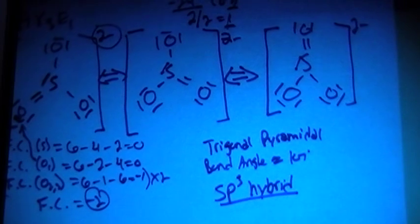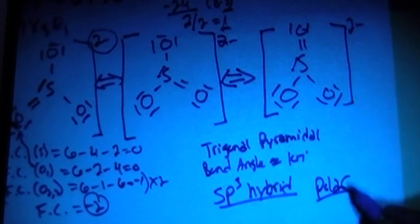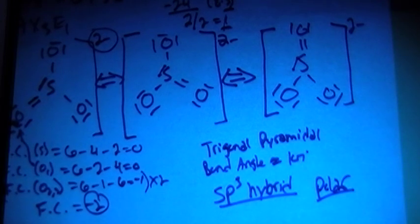And then this is going to be polar because of this lone electron pair up top here because none of these outer atoms can cancel out the electric charge that's given from that lone electron pair.